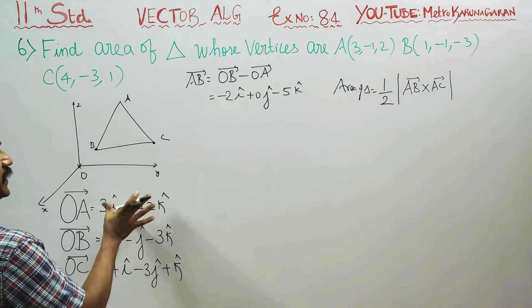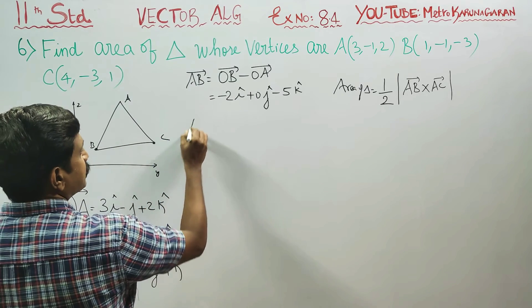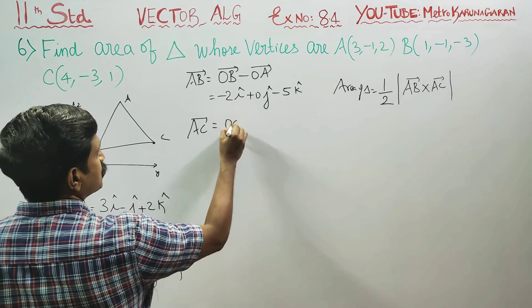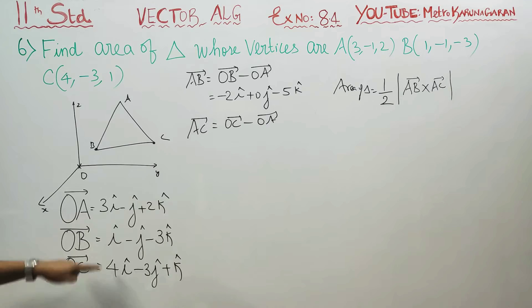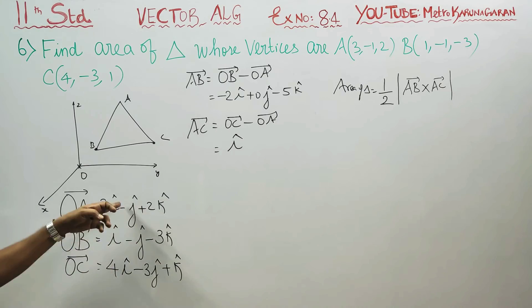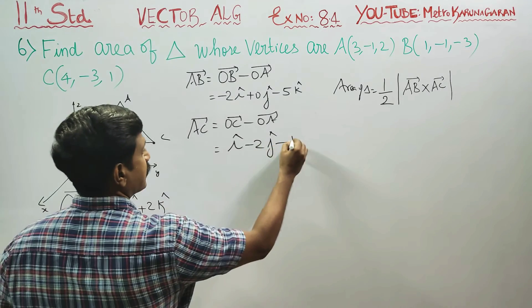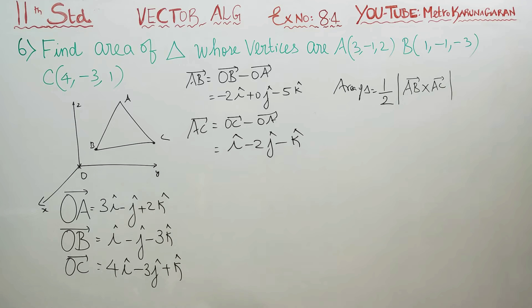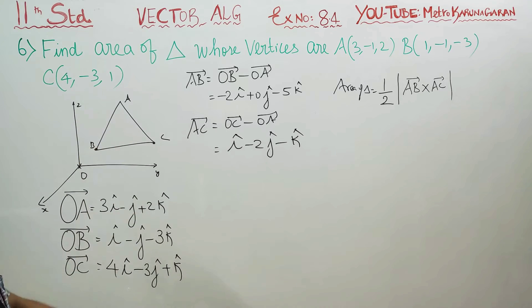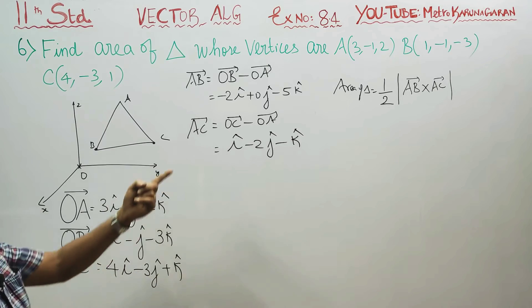After finishing AB vector, entering into AC vector. AC vector is OC vector minus OA vector. 4 minus 3 is 1i, minus 3 plus 1 gives minus 2j, and 1 minus 2 gives minus k. So AB vector is minus 2i plus 0j minus 5k, and AC vector is i minus 2j minus k.